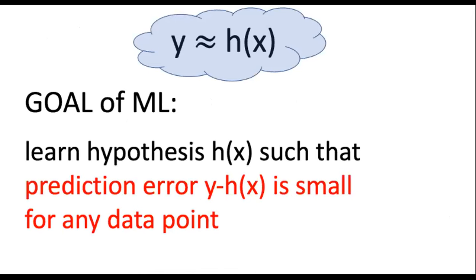The goal of machine learning is to learn a hypothesis map such that the prediction error is small for any data point — which means for any winter day or ski day in our application. To make this informal goal precise we need to fix two things: first, we need some measure for the size of the prediction error, and second, we need to make precise what we actually mean by saying 'for any data point.'